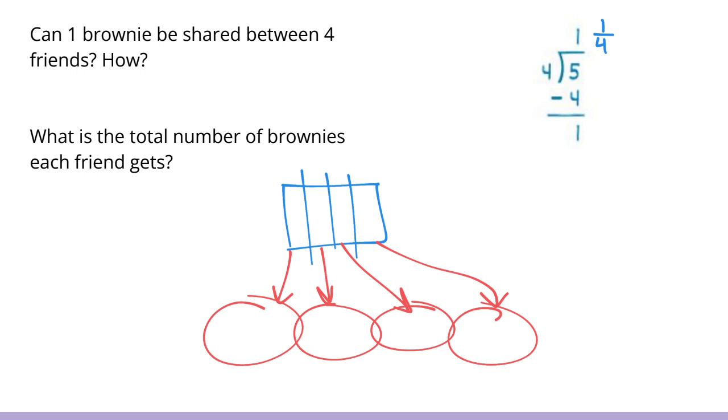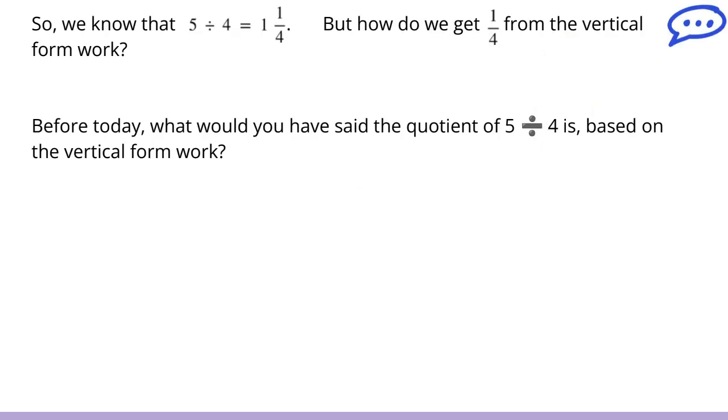In our vertical algorithm, we are showing one fourth as the remainder. But it really isn't the remainder because we divided one into those four groups. So we divided it all evenly. This slide gives it a little bit simpler form. So we know that five divided by four is one and one fourth, like in the previous slide.